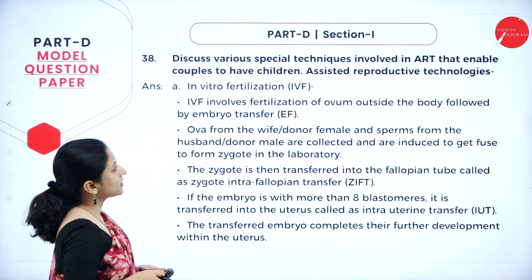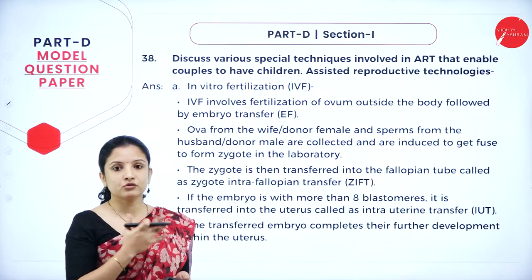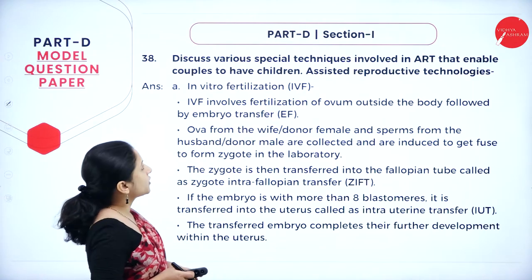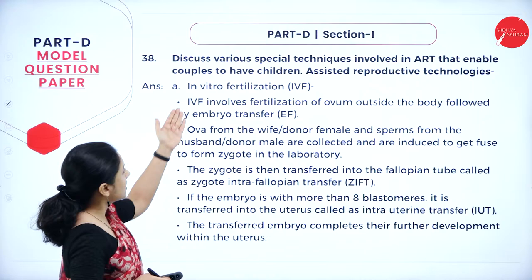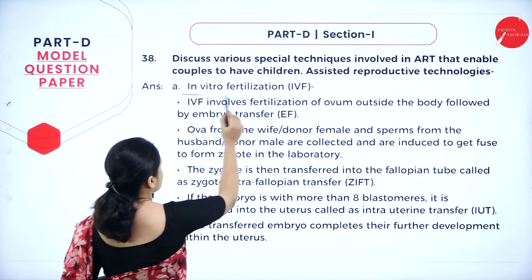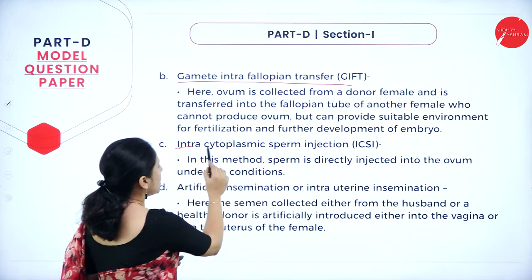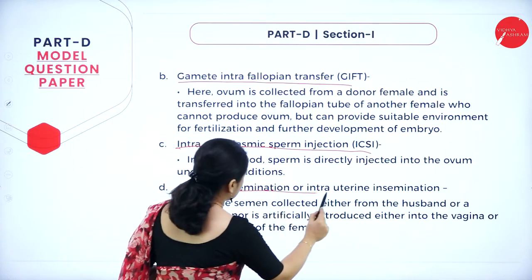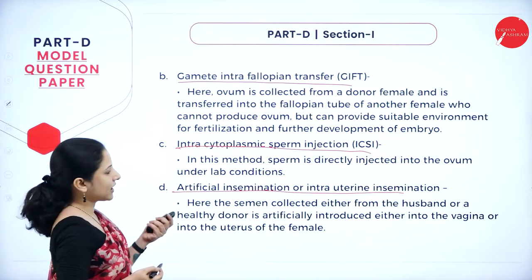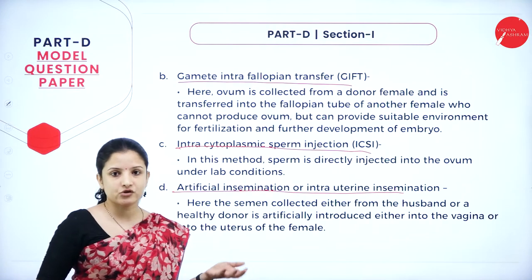Next question: discuss various special techniques involved in ART. ART stands for Assisted Reproductive Technology from the human reproductive health chapter. Write about five techniques for five marks: in vitro fertilization, GIFT (gamete intrafallopian transfer), ICSI (intracytoplasmic sperm injection), and artificial insemination or intrauterine insemination. Write five techniques or four with extra points — each fetches one mark for five marks total.